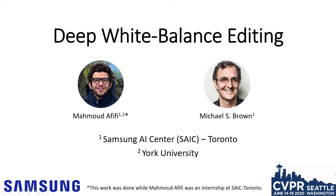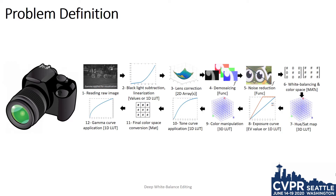Deep White Balance Editing. This work is by Mahmoud Afifi and Michael Brown. When you take a photo, a number of processing steps are applied by the camera's ISP hardware to render the original raw sensor image to its final output image.